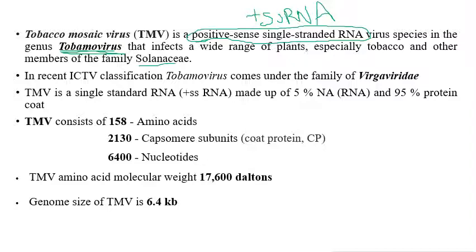TMV also infects other crops under the family Solanaceae. In the recent ICTV classification — ICTV stands for International Committee on Taxonomy of Viruses, which is the chief governing body for naming and classifying plant viruses — Tobamovirus comes under the family Virgaviridae.